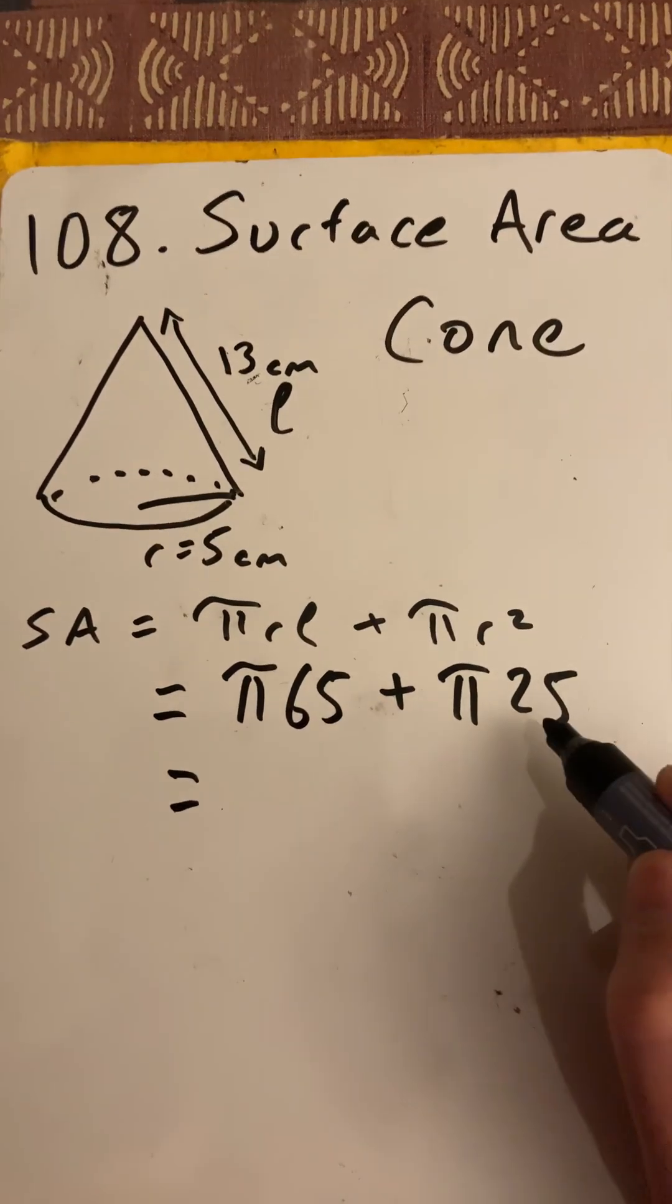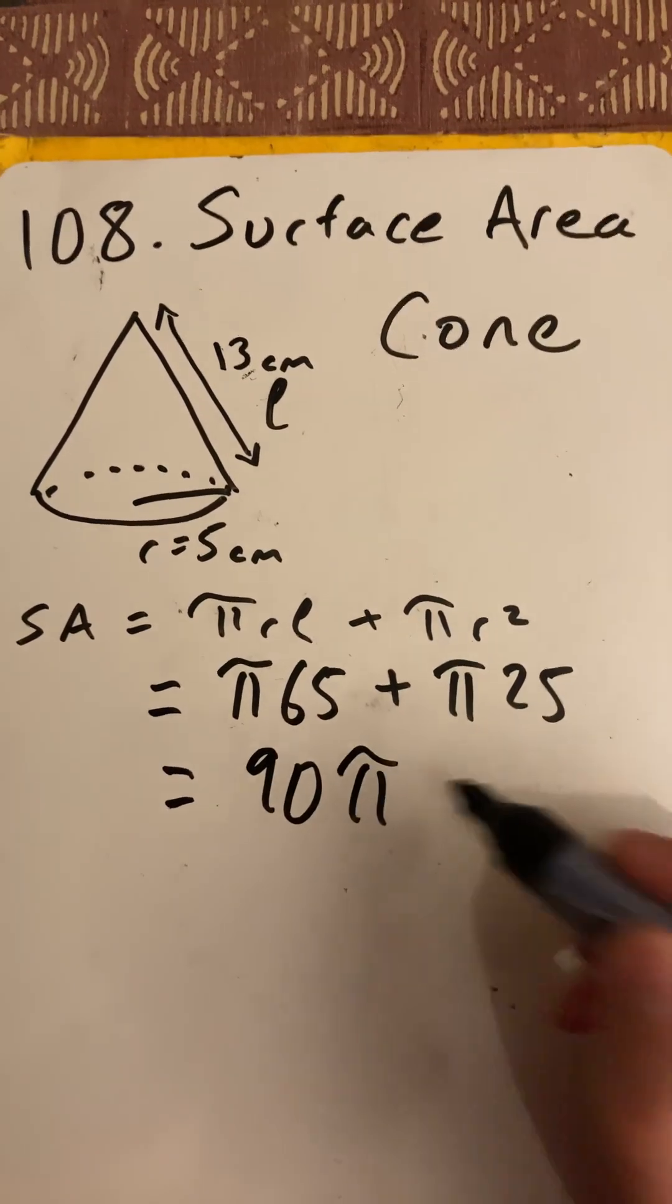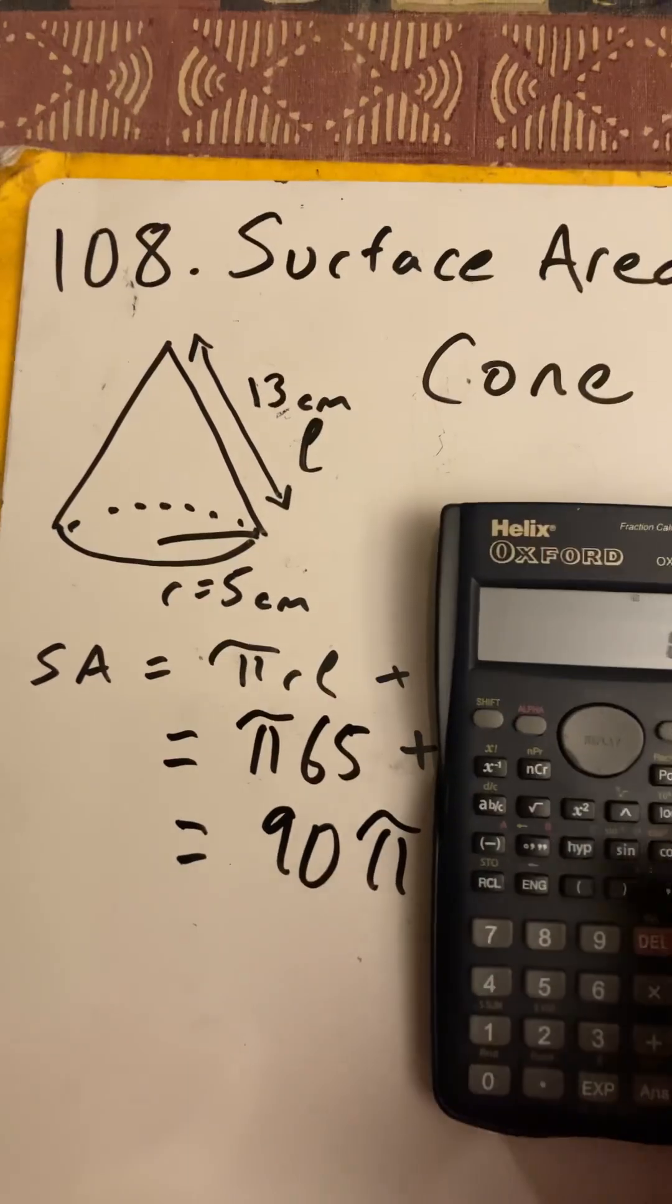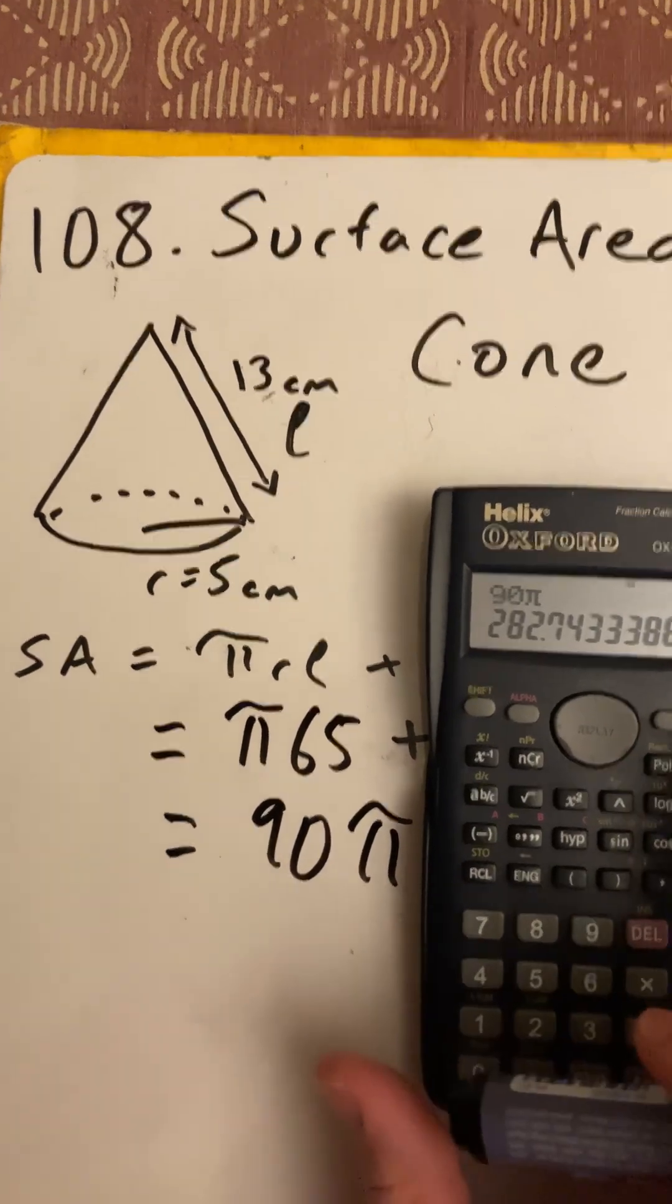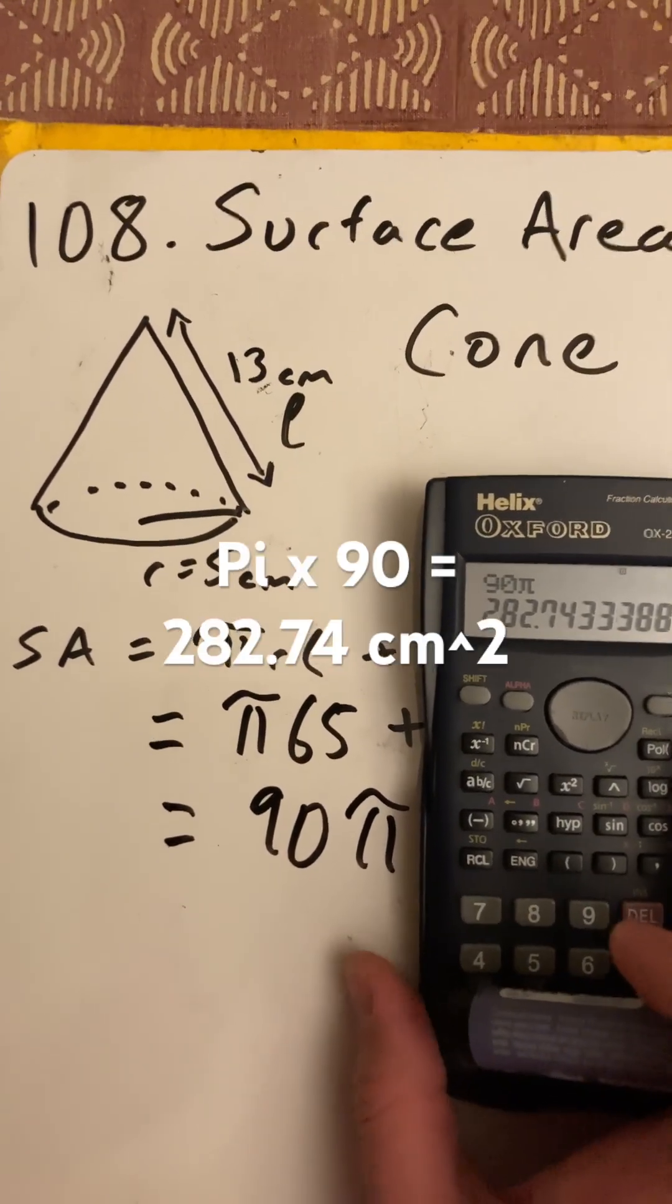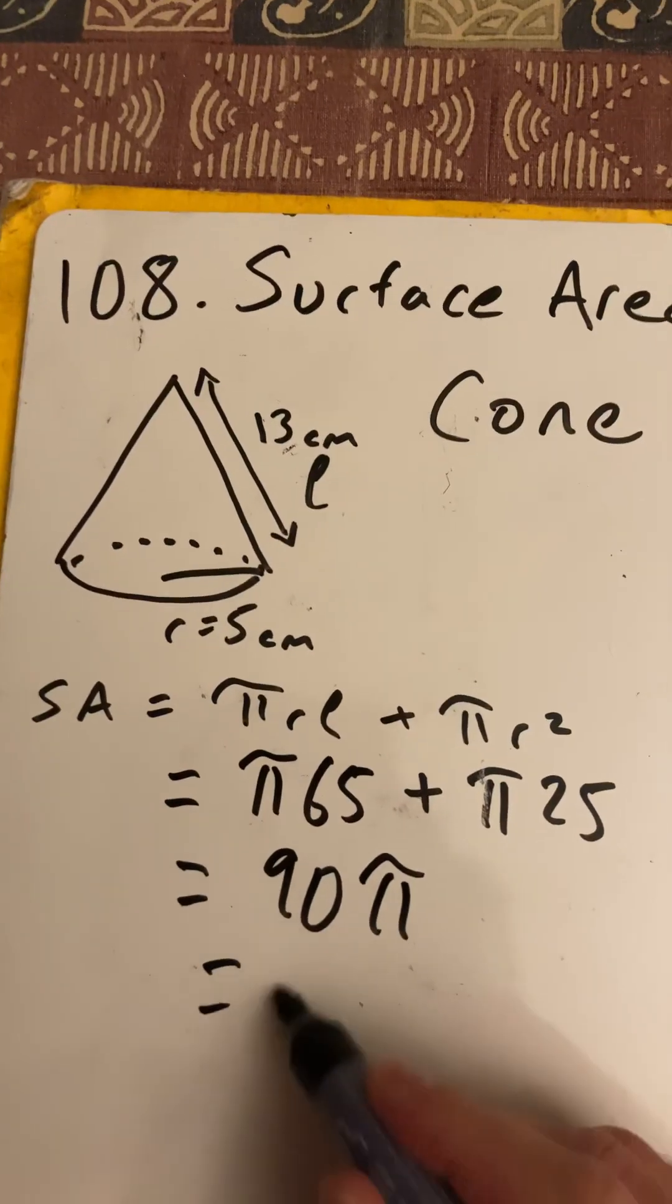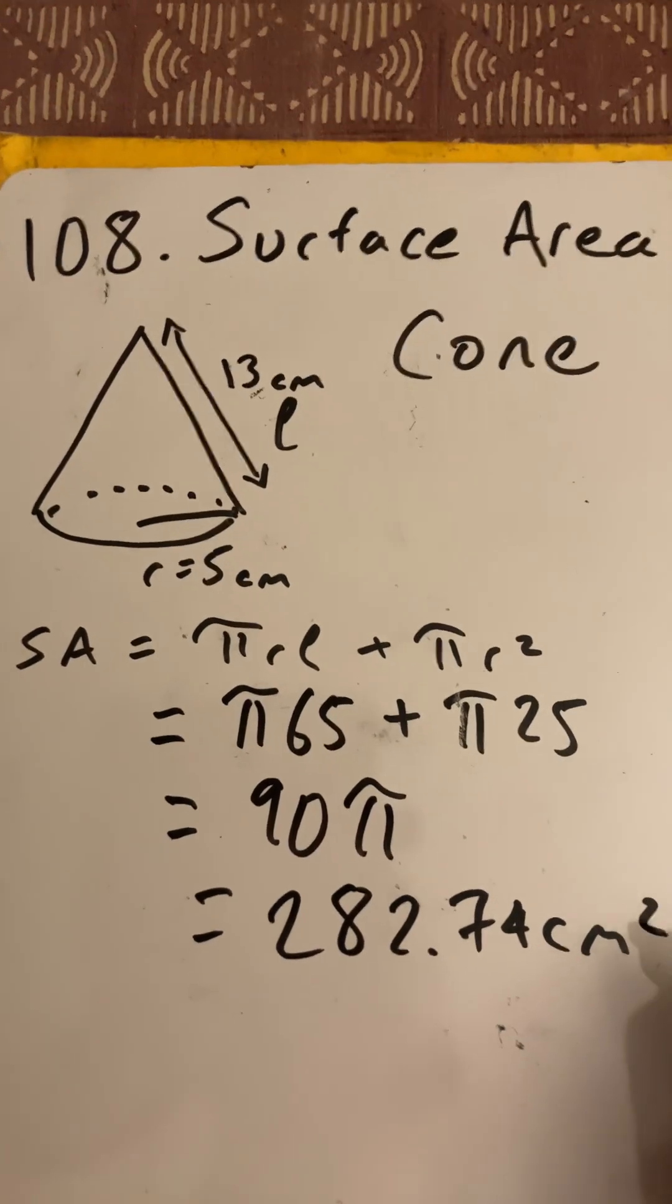Now 65 plus 25 is 90, so we have 90 pi. So if I work out, using a calculator, 90 pi, I get 282.74, 282.74 centimeters squared.